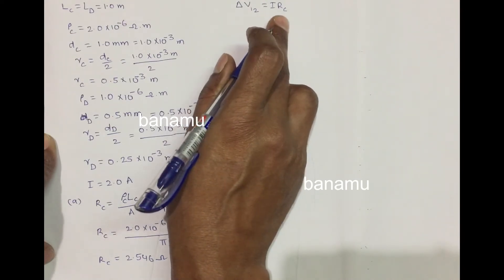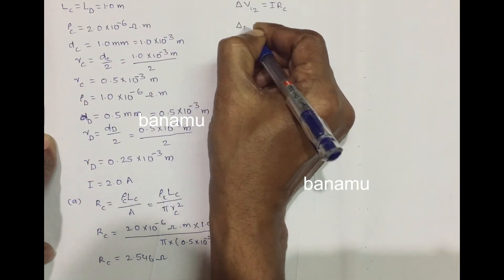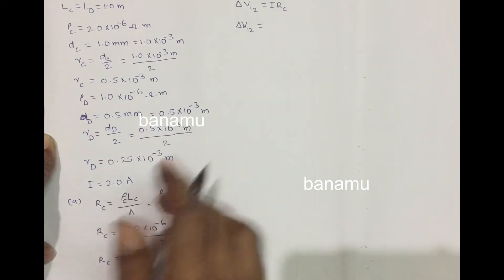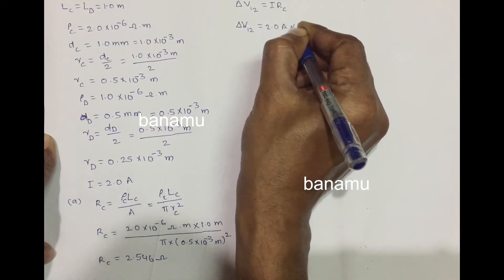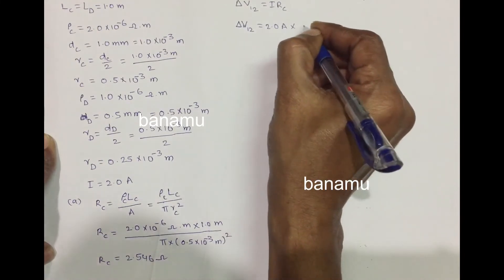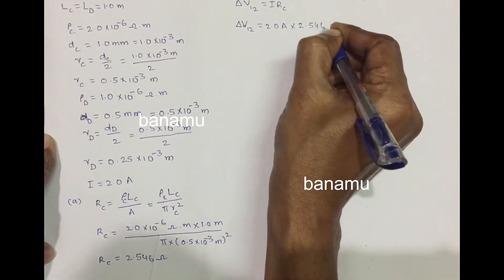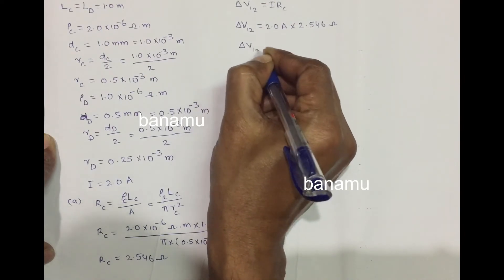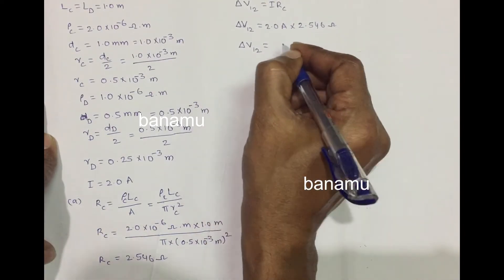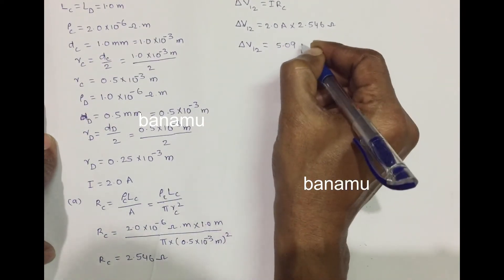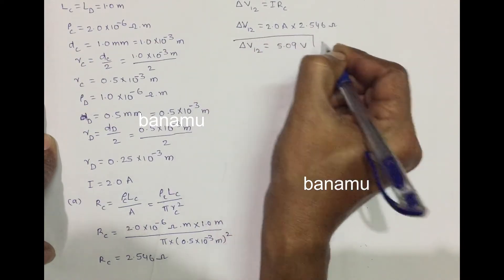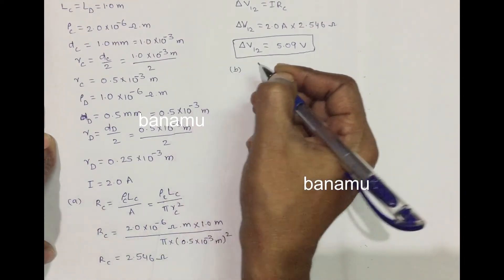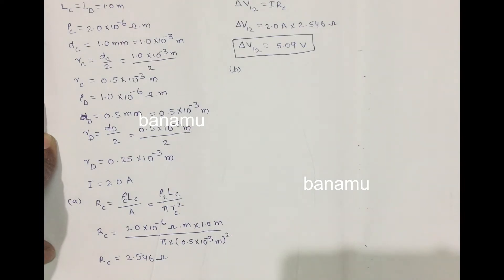Using the current and resistance of wire C, the potential difference between points 1 and 2 is ΔV₁₂ = I × RC = 2 A × 2.546 Ω = 5.09 V. This is the potential difference between points 1 and 2.